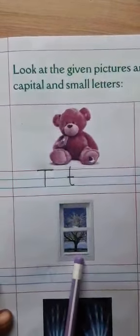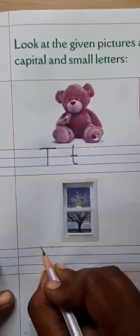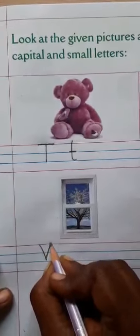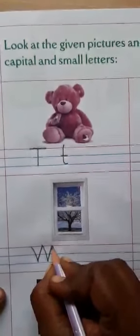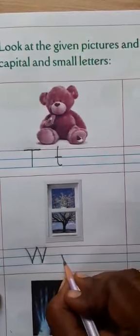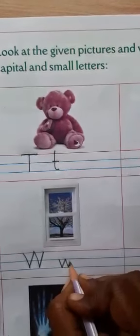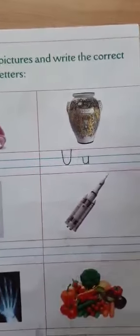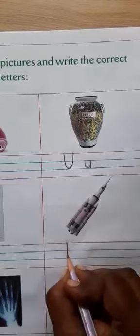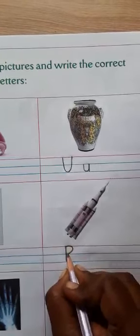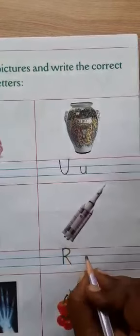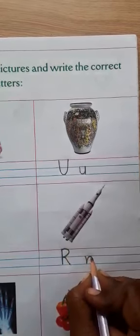Window. W for Window. Capital letter W and small letter W. Rocket. R for Rocket. Capital letter R and small letter R.